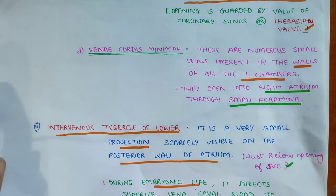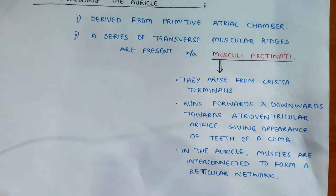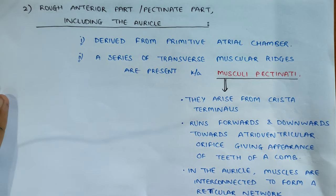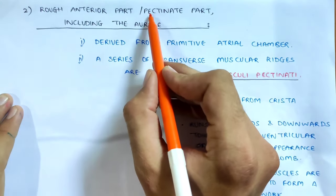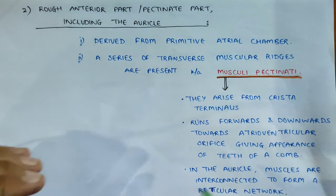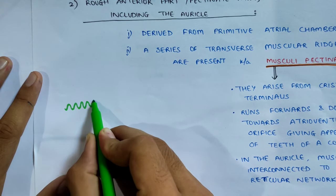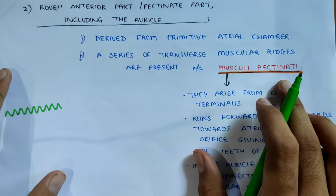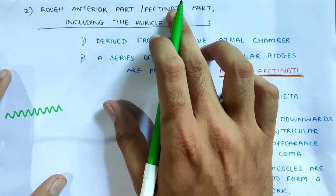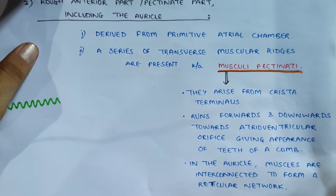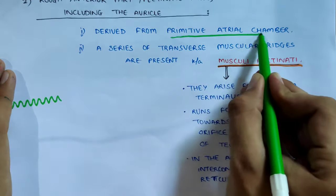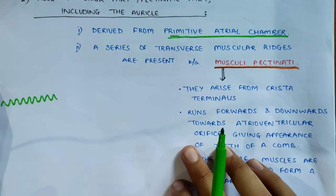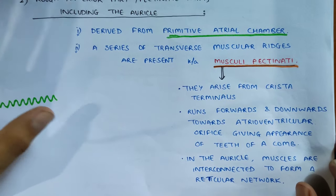So this is our smooth posterior part. Now we go to the rough anterior part. The anterior part is rough because there are muscular ridges present called musculi pectinati. The smooth posterior part is derived from the right horn of sinus venosus, and the rough anterior part is derived from the primitive atrium.